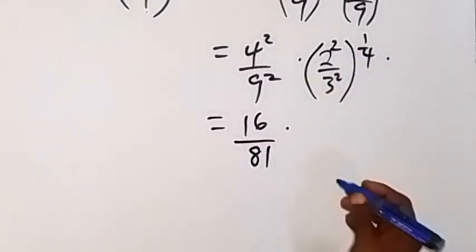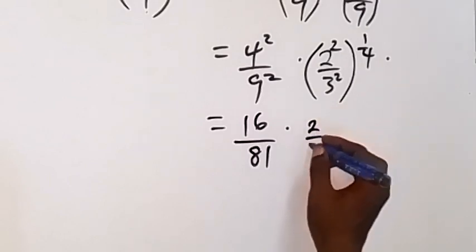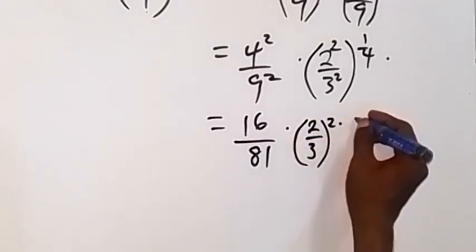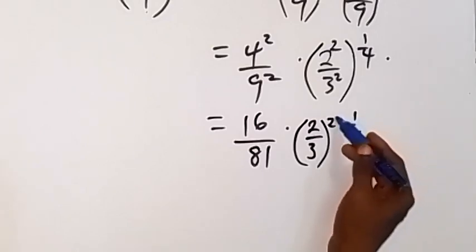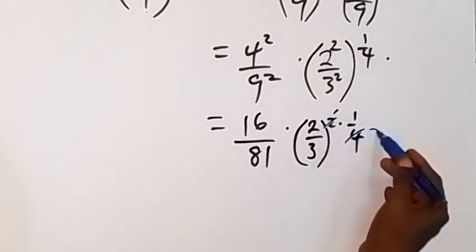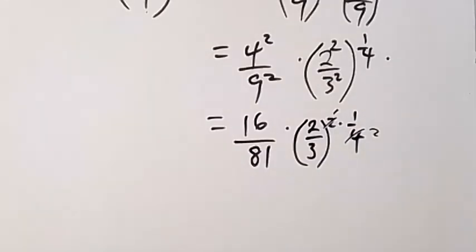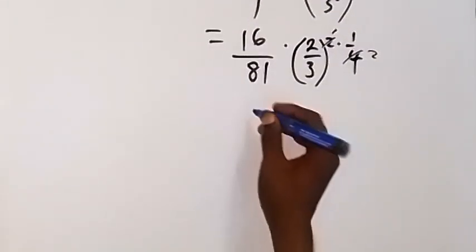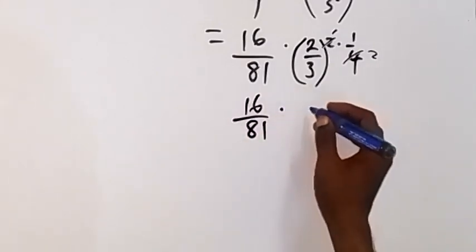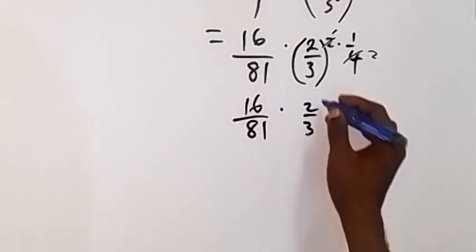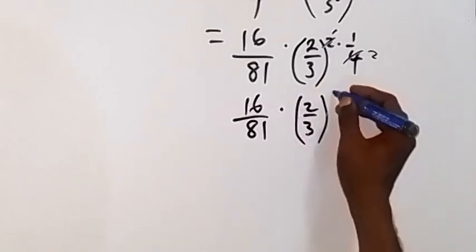So far the 2 having the same power, that's 2/3 raised to power 2 times 1/4. And this power multiplied, so 2 here, 1/2 here, 2 now. And from there you can see we have 16/81 times 2/3 raised to power what will be left is 1/2 here.